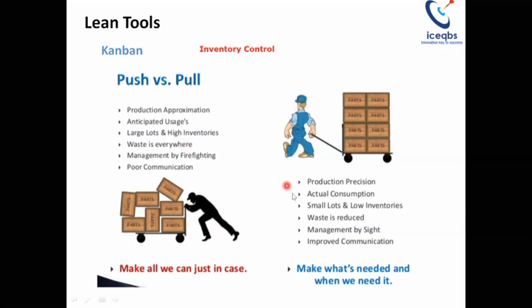The pull system means 'make what is needed and when it is needed.' You produce exactly whatever the customer wants. Once the customer triggers a request saying he wants something done, you take only that amount — don't produce anything extra. Since the customer is pulling from you, he will always be after your sales department. When supplies are needed, sales puts pressure on the quality team, quality puts pressure on production, production puts pressure on stores, stores puts pressure on purchasing, purchasing puts pressure on finance, and finance puts pressure on marketing to collect the money.